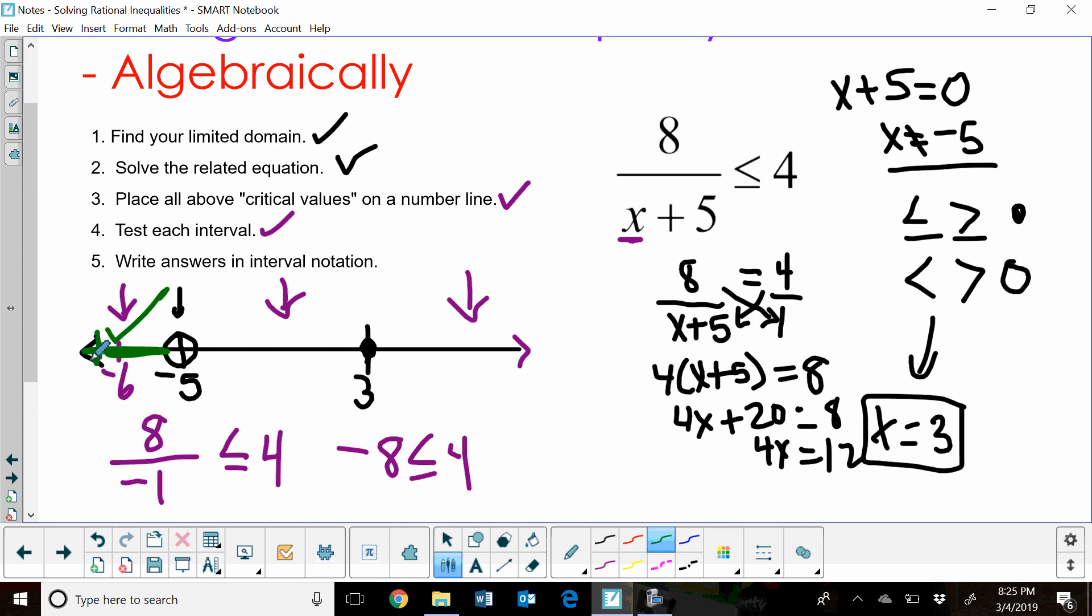That means I'm going to shade my inequality to the left. Now what I'm going to do is plug a value in that falls between negative 5 and positive 3. Well, the easiest one to plug in there is just 0. So let's plug a 0 in for x.